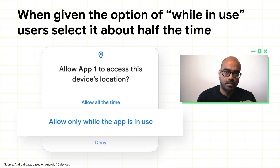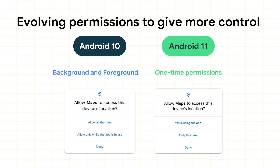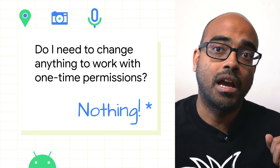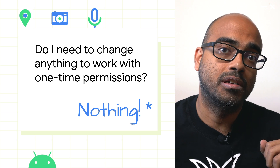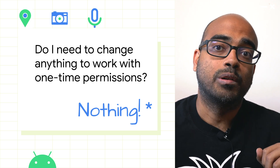Let's start with an interesting statistic about Android 10. When users were given the option to access location only while an app is in use, users selected it about half the time. So on Android 11, we're evolving the permission system to give users even more control. We're now giving users the option to temporarily grant permission valid for only a single use by an app. The permission grant remains valid while the app is in the foreground, either as a visible activity or as a foreground service, and expires a short period after the app is moved to the background. App developers won't have to make any new changes to remain compatible on Android 11, provided they're following permissions best practices.